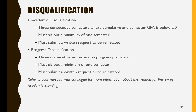Now let's take a look at progress disqualification. A student is placed on progress disqualification after three consecutive semesters where their cumulative and semester completion rate is below 51%. If a student finds themselves in this situation, the student will be required to sit out a minimum of one semester. At this time, you do not need to worry about disqualification, but you do want to begin moving your GPA and/or your progress in a positive direction.